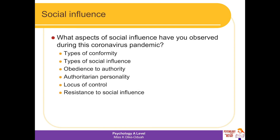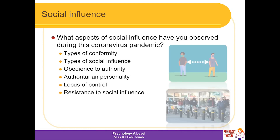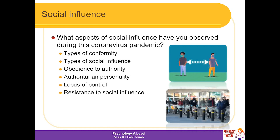We start off with social influence, and we've covered so many topics within it. When I think about social influence and the coronavirus, I think about social distancing. We can see people queuing and giving space to their neighbour. Someone might join a queue simply because they see everyone else doing it — and we could use that as an example of conformity.